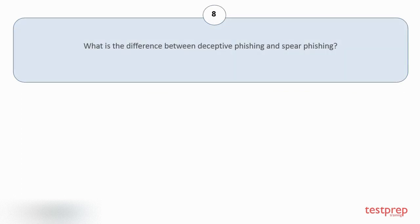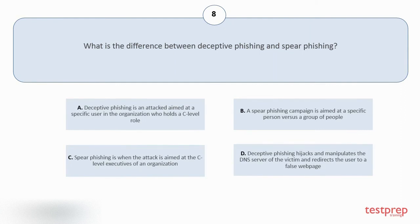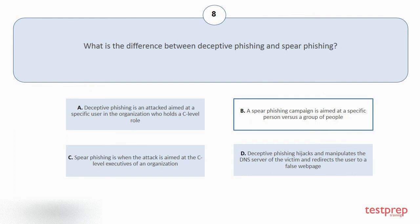Question number 8. What is the difference between deceptive phishing and spear phishing? Your options are: A. Deceptive phishing is an attack aimed at a specific user in the organization who holds a C-level role. B. A spear phishing campaign is aimed at a specific person versus a group of people. C. Spear phishing is when the attack is aimed at the C-level executives of an organization. D. Deceptive phishing hijacks and manipulates the DNS server of the victim and redirects the user to a false web page. The correct answer is option B.